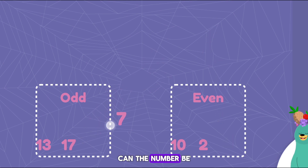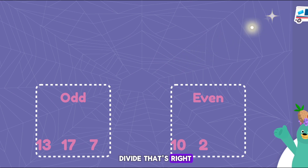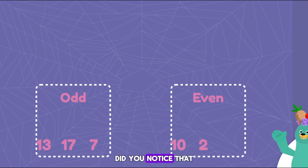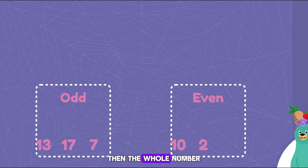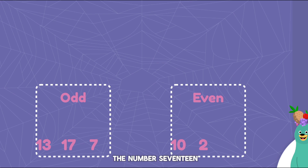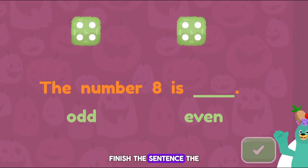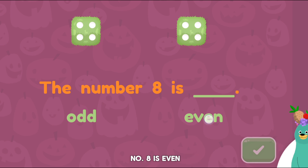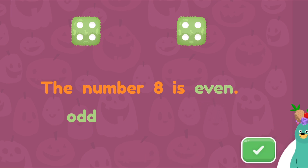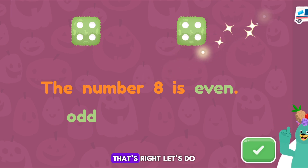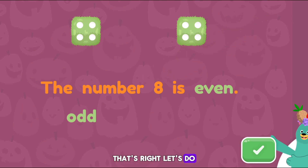Can the number be divided? That's right! Did you notice that if the one's place is odd, then the whole number is odd? The number seven is odd, and so is the number seventeen. Finish the sentence. The number eight is even. That's right! Let's do another one.